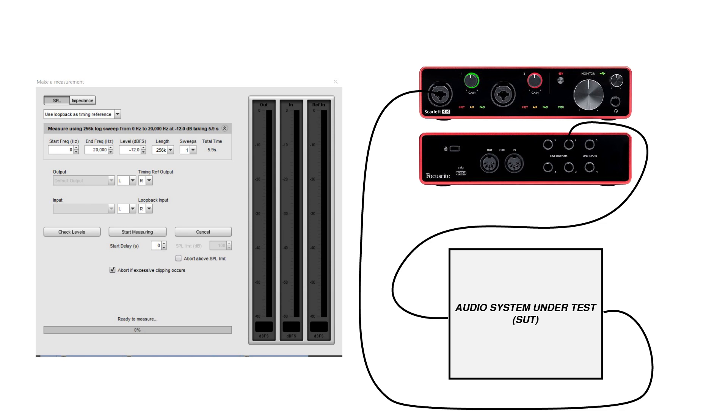We'll also need to set up a path for a reference signal. In a basic test, this is simply a cable that connects output 2 of the audio interface directly into input 2 of the audio interface. This allows the software to ignore any effects that the output and input of the audio interface have on the signal, because both the test signal path and the reference signal path will include these elements. More on this later.